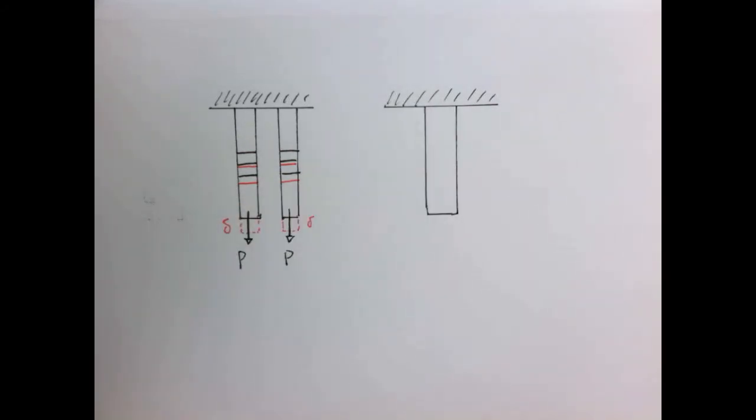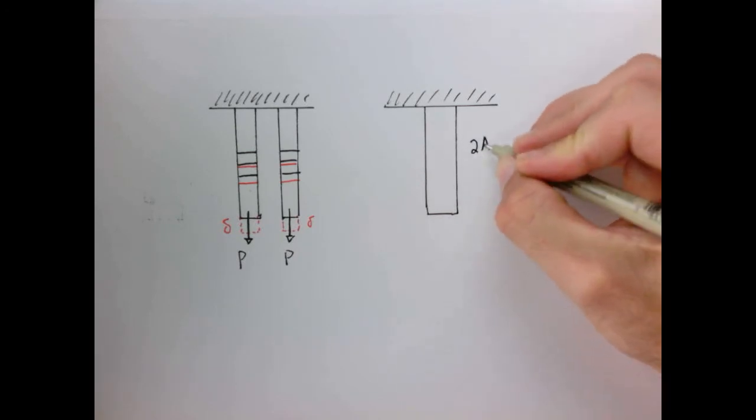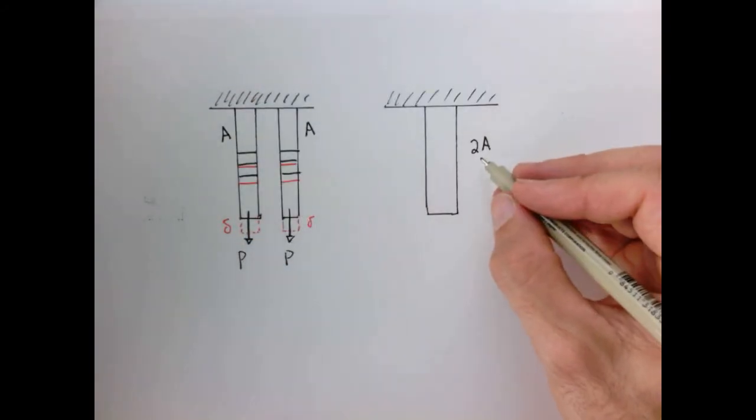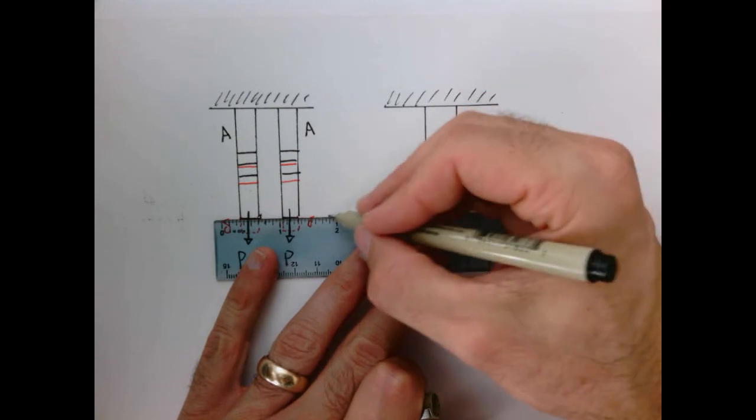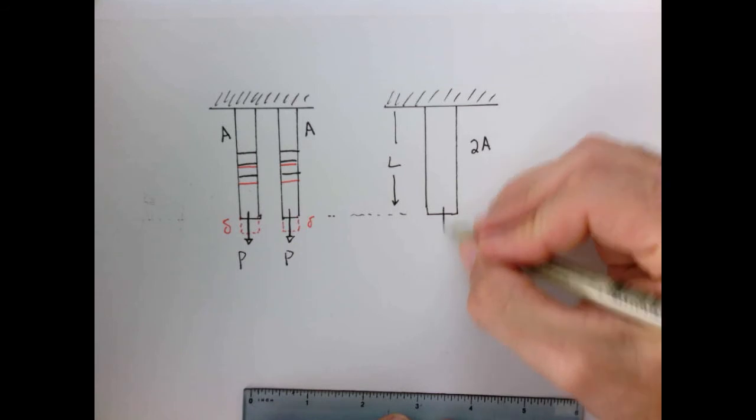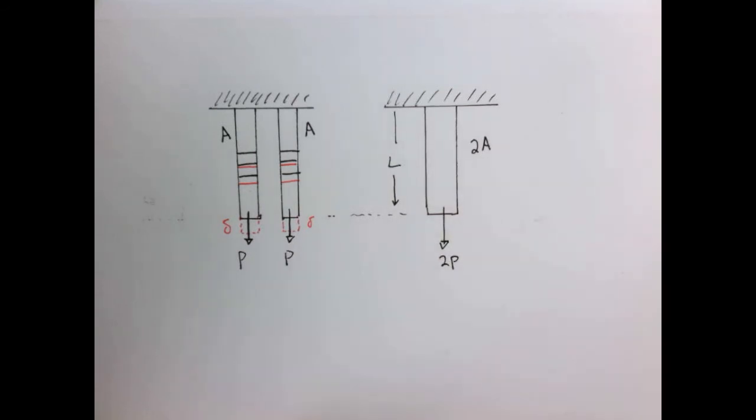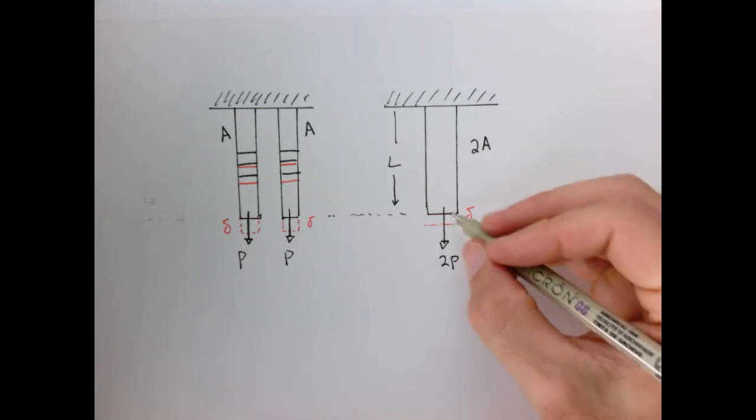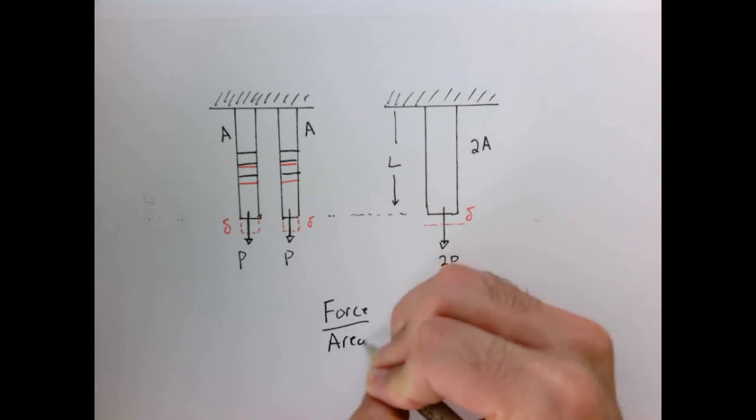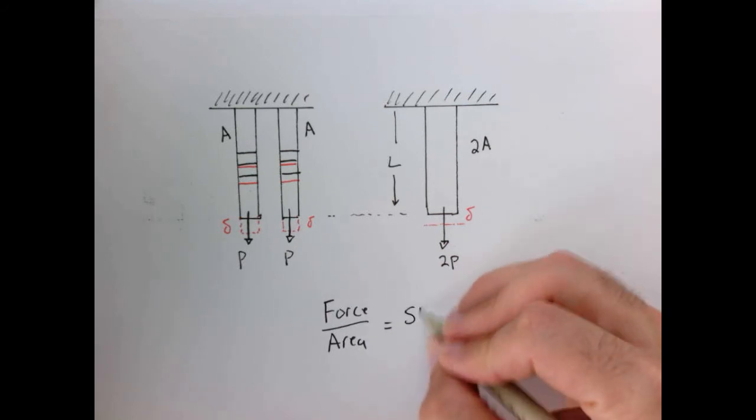So we would expect that if I could fuse these together that there would be no difference. So now I'm going to have a bar over here which has twice the area that these had. So if these each had cross-sectional area A, this one has cross-sectional area 2A. The length is the same. And so if I apply a load 2P, we would expect that the delta would be the same. So what this leads us to is that when we want to talk about deformation, it's not the force that matters, but it's the force per unit area. And this idea of force per unit area is something that we call stress.